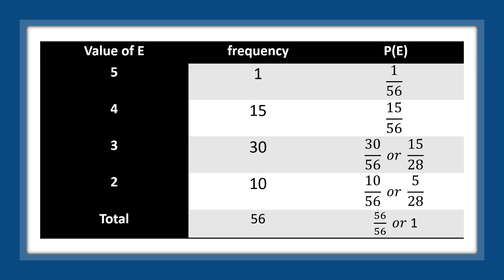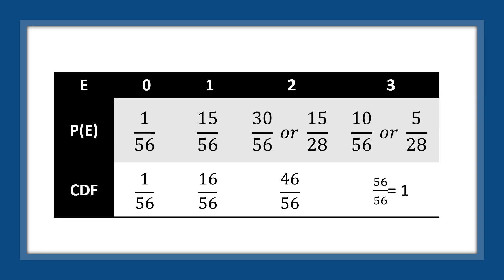For the discrete probability distribution, the frequencies for E are: value 5 has frequency 1, value 4 has frequency 15, value 3 has frequency 30, and value 2 has frequency 10. The total is 56. So probabilities P(E) are: 1/56, 15/56, 30/56, and 10/56. Adding all values of P(E) equals 1, as it should. Now let's find the mean, variance, and standard deviation. Set up the five-column table: E, P(E), E times P(E), E squared, and E squared times P(E).